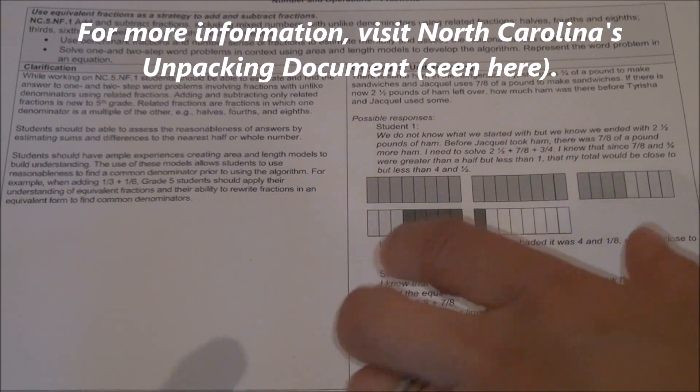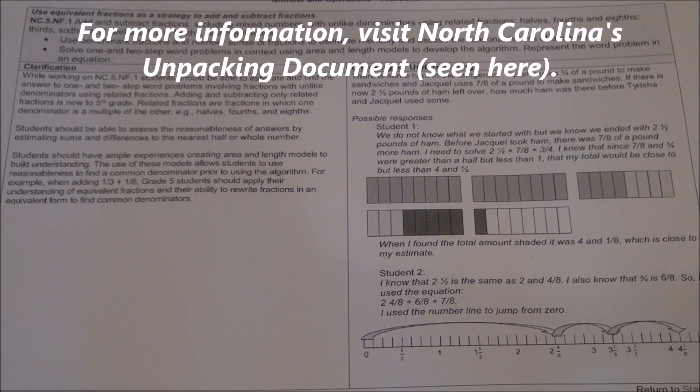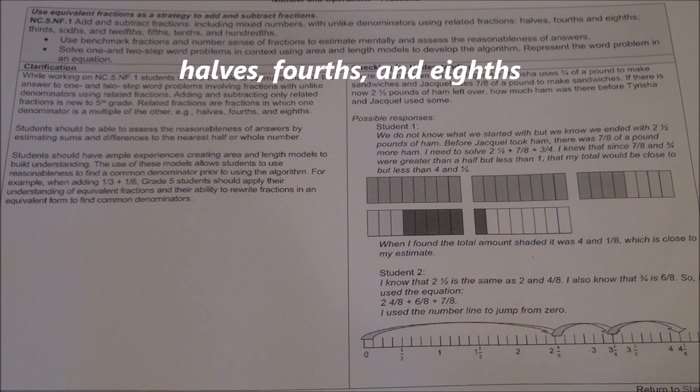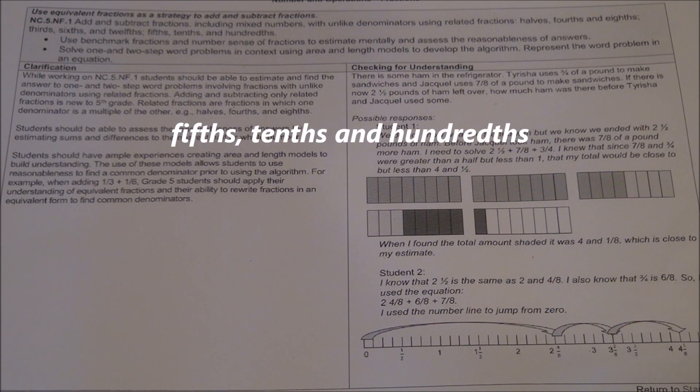NF1 calls for students to add and subtract fractions with unlike but related denominators. The standard identifies halves, fourths and eighths as being related, thirds, sixths and twelfths as related, and fifths, tenths and hundredths as related.